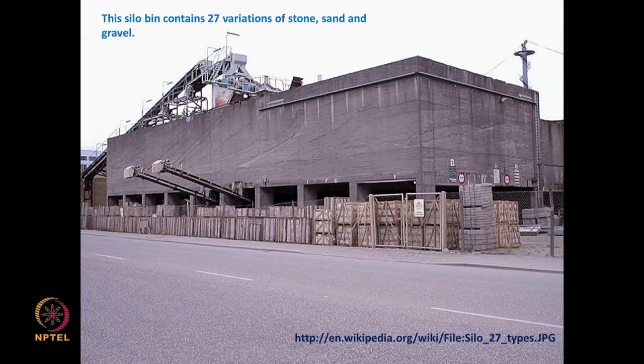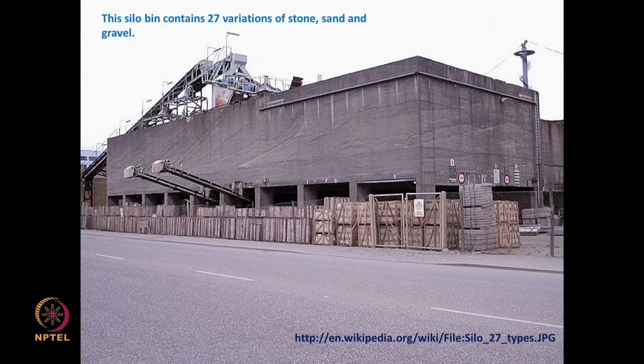This is an example of an industrial silo. It actually contains stone, sand and gravel — many varieties — and they are kept segregated from each other. This is an example of a rectangular bin.